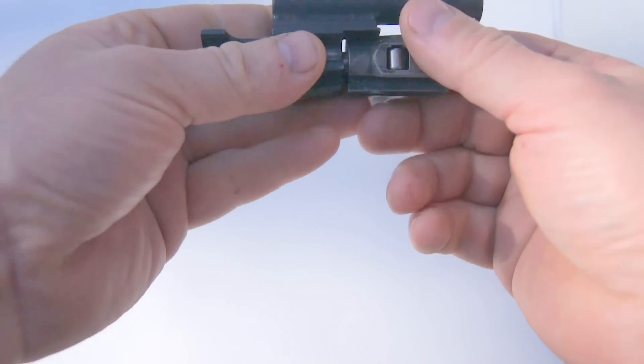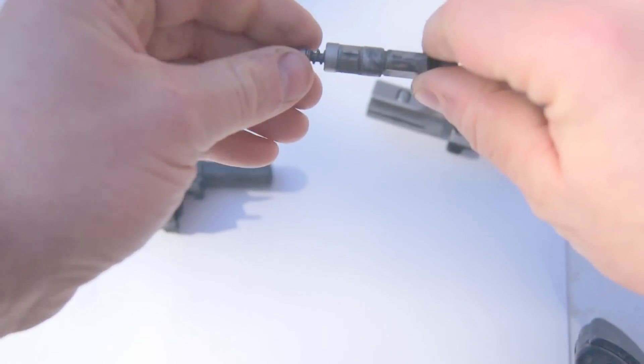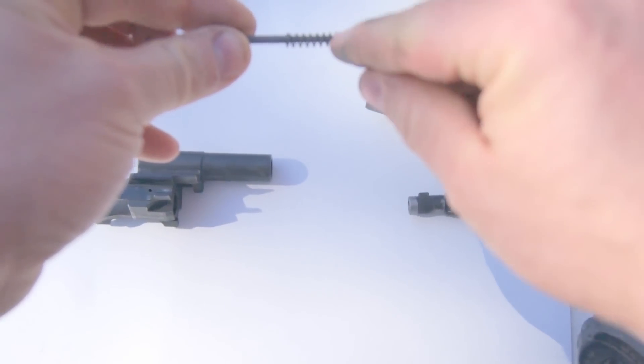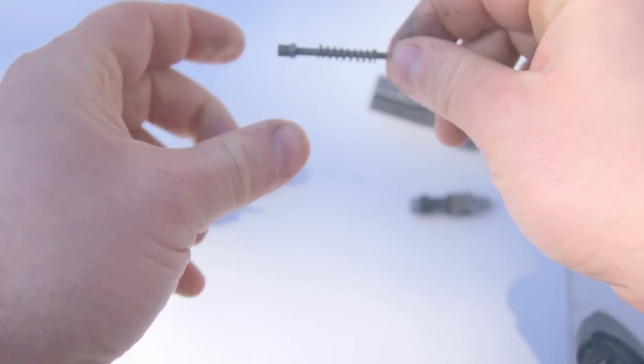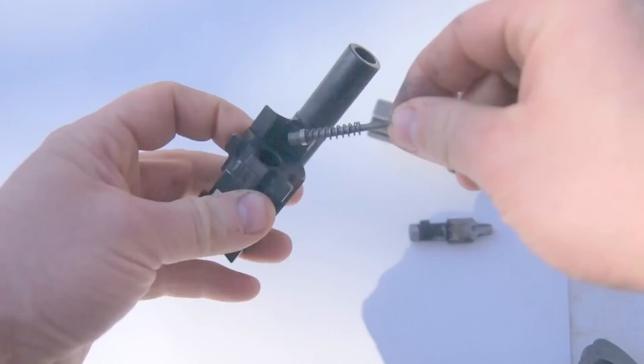We'll start out with the MP5. MP5 is very simple. Rotate the locking piece until it will come out, which is there. Pull out the firing pin. Here's your firing pin spring. Look for any damage in the coil, coil binding, broke spring, that kind of thing.